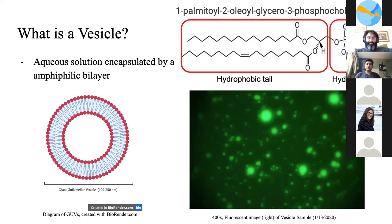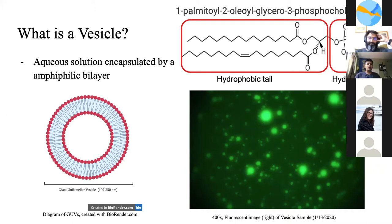A vesicle is an aqueous solution surrounded by amphiphilic lipids that form in a bilayer. The lipid is amphiphilic because it has both hydrophilic and hydrophobic parts. The hydrophilic head has a negative charge on the phosphate group, allowing it to hydrogen bond with surrounding water. The hydrophobic tail is insoluble in water because it has many nonpolar elements.